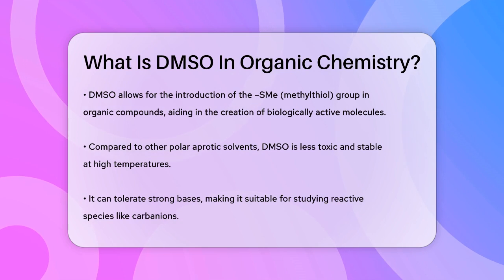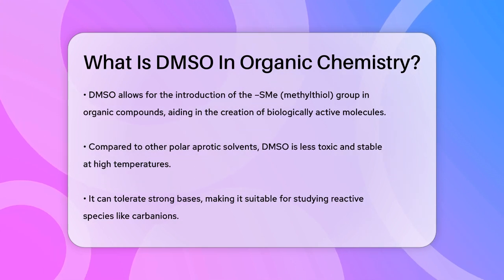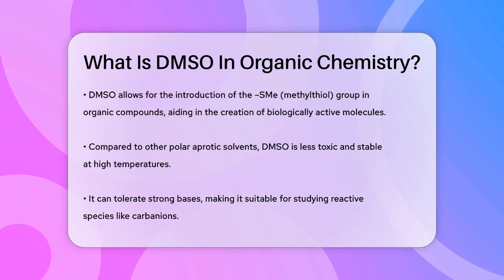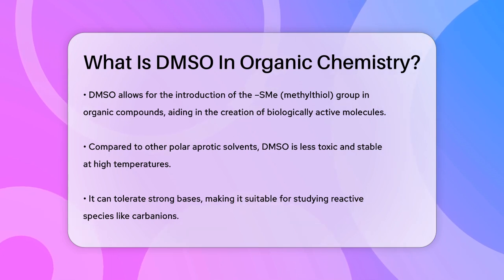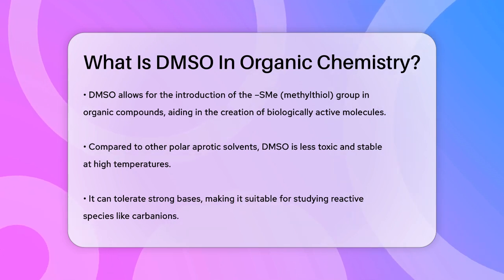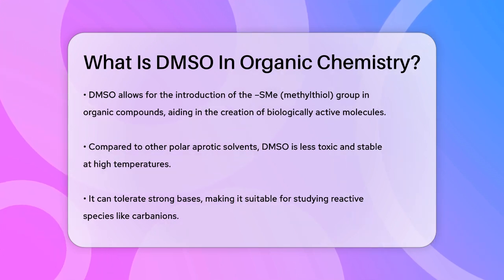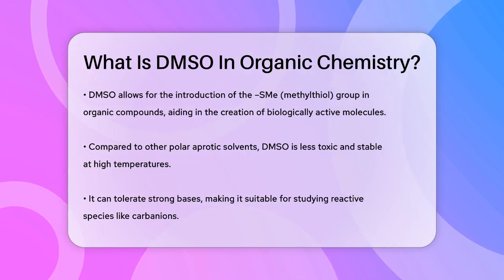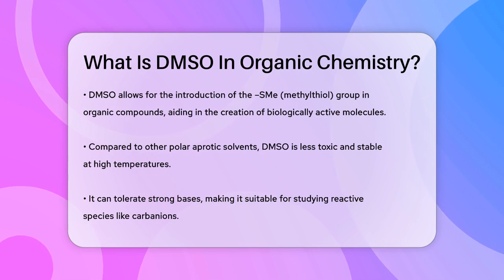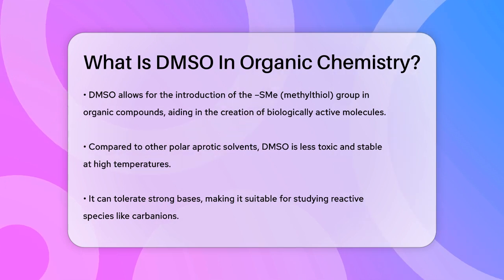As a solvent, DMSO is less toxic compared to other polar aprotic solvents, like dimethylformamide or hexamethylphosphoramide. It's stable at high temperatures and can tolerate relatively strong bases, making it ideal for studying carbanions and other reactive species.